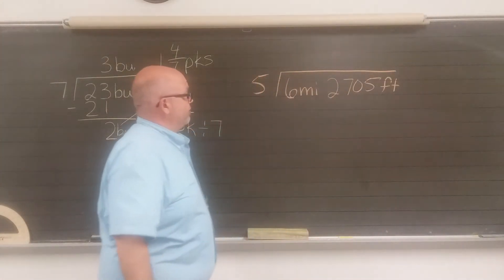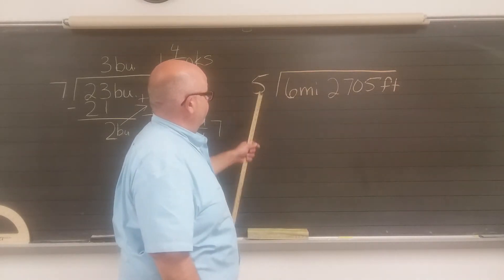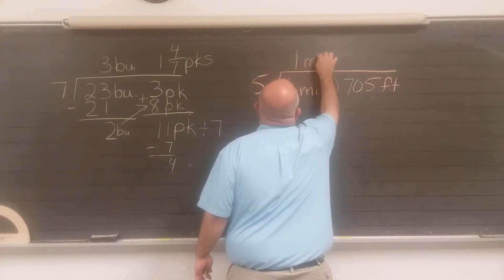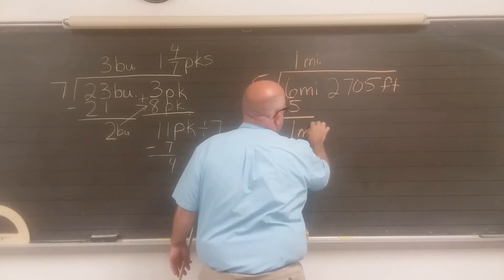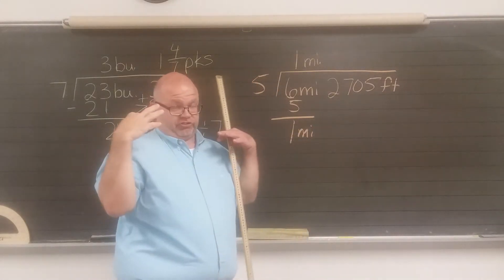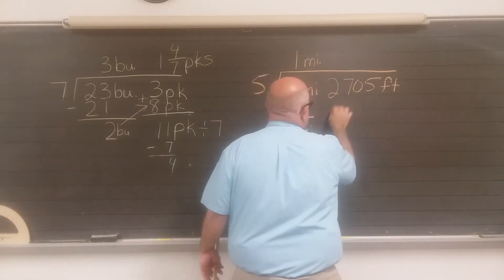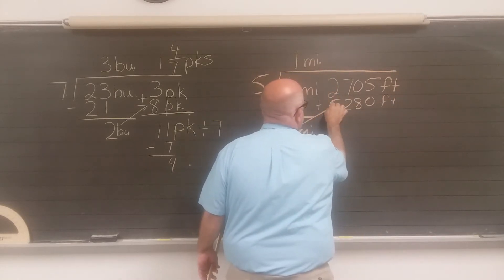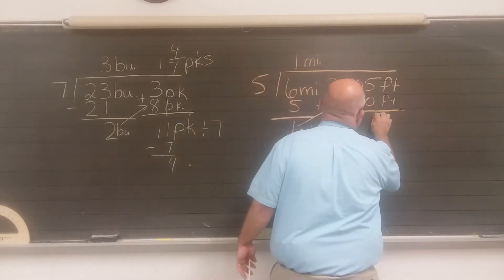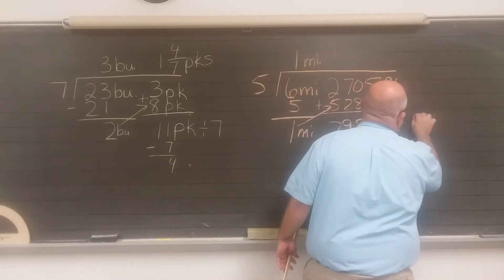Do the same thing over here. Six miles, two thousand seven hundred five feet divided by five. Five into six miles is what? One. One mile. One times five. Six minus five. You have one mile left. You don't have to do all these labels and stuff, but this is just to show you to keep stuff track. So you have one mile left. Turn the one mile into feet. How many feet per mile? 5,280. Your one mile became 5,280 feet. Add that. Seven thousand nine hundred eighty-five. That's feet divided by five.